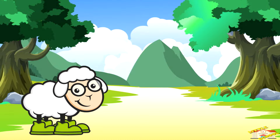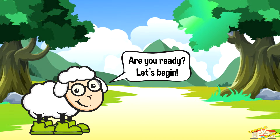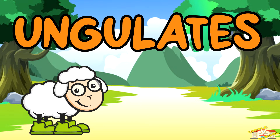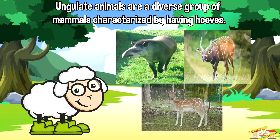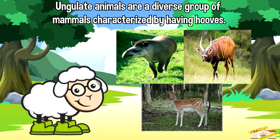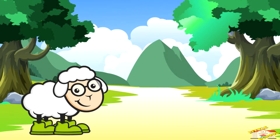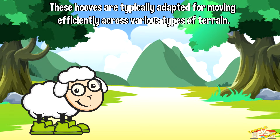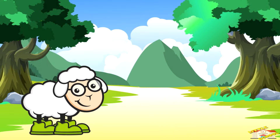Hey kids, today's video we'll be learning about ungulate animals. Are you ready? Let's begin. Ungulate animals are a diverse group of mammals characterized by having hooves. These hooves are typically adapted for moving efficiently across various types of terrain, such as grasslands, forest, or mountains.